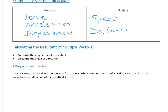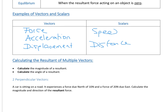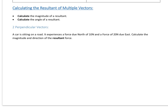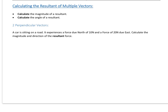Let's look at how we can apply this vector knowledge to forces. We're going to calculate the magnitude and angle of a resultant, which is formed by combining several forces together to find the overall impact. We've got a car sitting on a road — it experiences a force due north of 10 newtons and 20 newtons due east. Calculate the magnitude and direction of the resultant force.